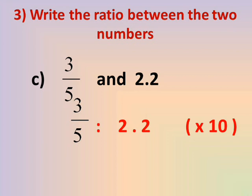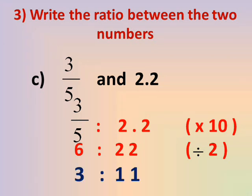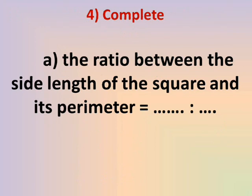Number C: 3 over 5 and 2.2. Here we have a fraction and a decimal. We can multiply by 10 to convert the decimal — this is the easier approach. 3/5 × 10 = 6 and 2.2 × 10 = 22. Then 6 ÷ 2 = 3 and 22 ÷ 2 = 11. The ratio in simplest form is 3 to 11.